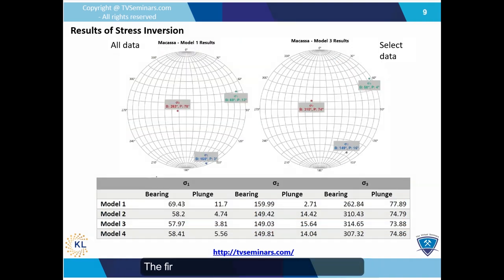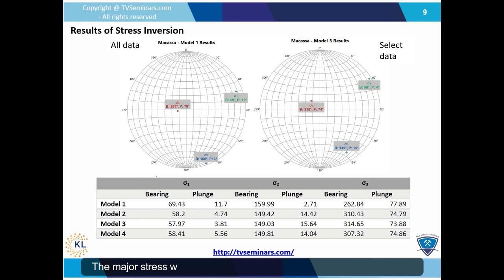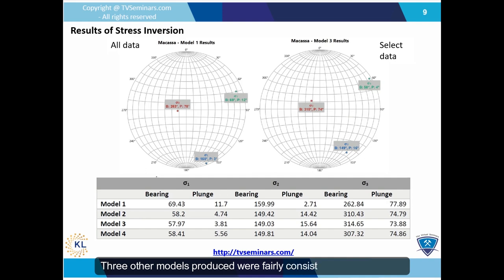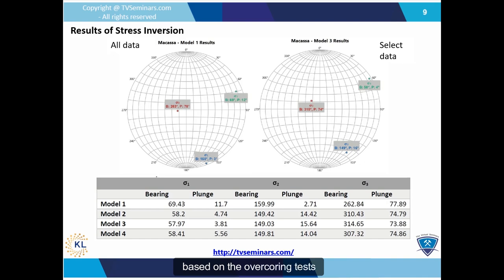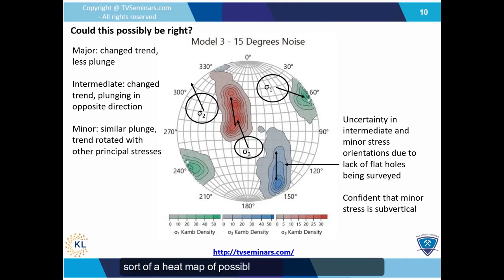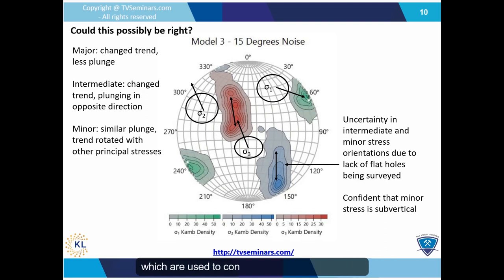Several models were run to fit the data. The first model used all available data and produced a stress tensor that was quite surprising — the major stress was oriented east-northeast instead of north-northeast. There are a few holes with misfit data, and different combinations were excluded from subsequent models. The three other models produced were fairly consistent with each other, but still showed a result much different than expected based on the overcoring tests. Each model had an uncertainty analysis shown as a heat map of possible principal stress orientations, with more uncertainty in the sigma 2 and sigma 3 orientations because we did not survey any flat holes.